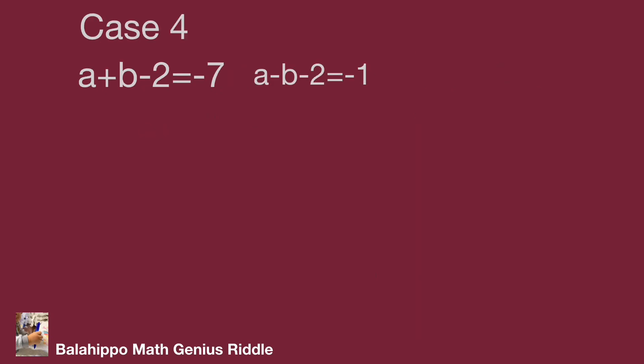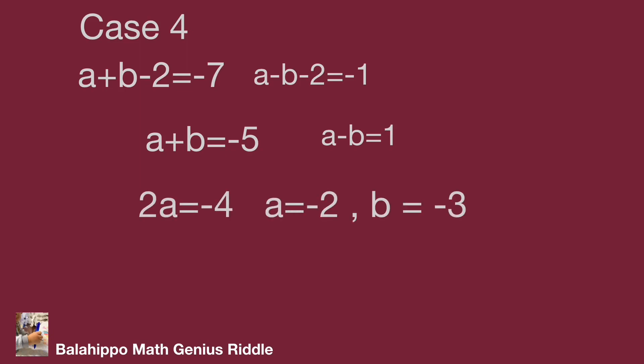In case 4: a plus b minus 2 equal to negative 7 and a minus b minus 2 equal to negative 1. Solving gives a equal to negative 2 and b equal to negative 3. But b is negative, so the result is false.